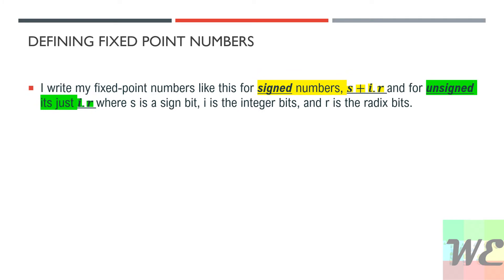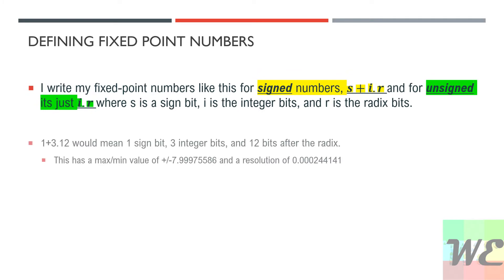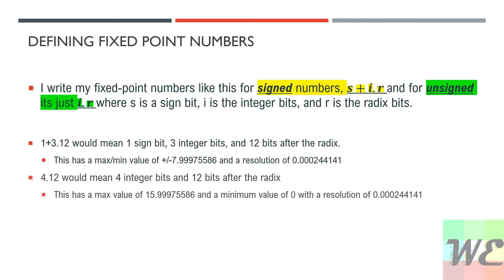I write my fixed-point notations like this. For signed numbers it's s plus i dot r, and for unsigned numbers it's just i dot r, where s is the sign bit, i is the integer bits, and r is the radix bits. So 1 plus 3 dot 12 would mean 1 sign bit, 3 integer bits, and 12 bits after the radix. This has a max/min value of plus or minus 7.9975586 and a resolution of 0.00244141.